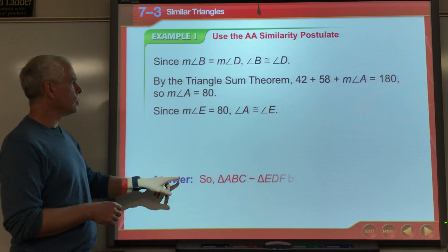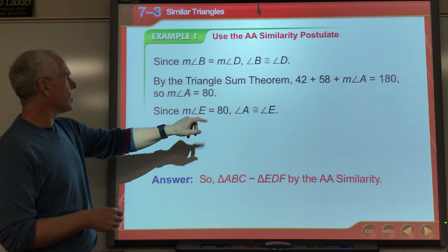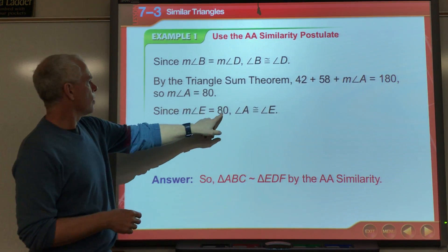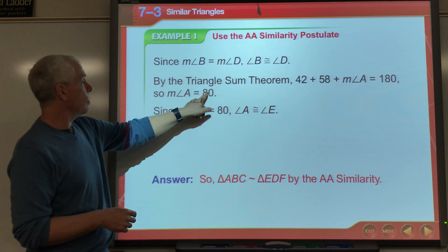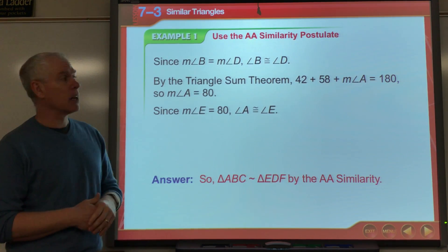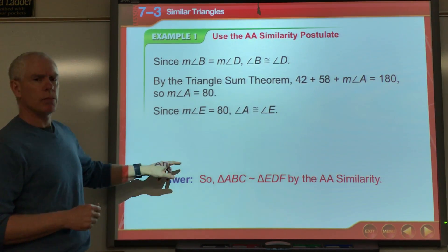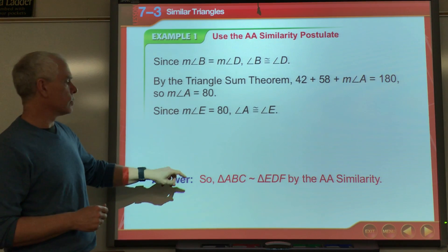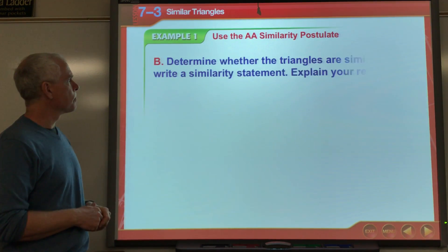It turns out that the third angle in the first triangle is 80 degrees, and we had an 80-degree angle in the other triangle as well. So we did have two angles congruent to two angles.